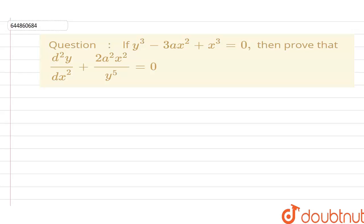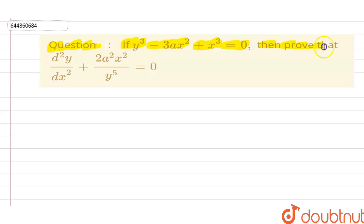Hello viewers and welcome to Doubtnut. The question is: if y³ minus 3ax² plus x³ is equal to 0, then prove that d²y/dx² plus 2a²x² divided by y to the power 5 is equal to 0.